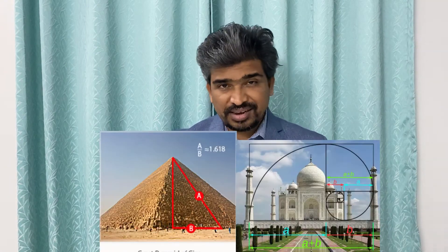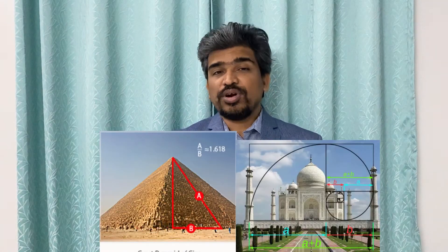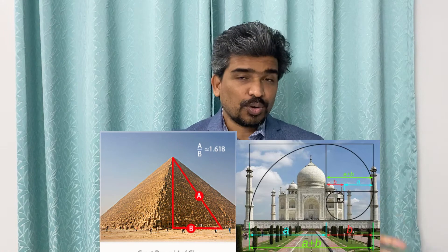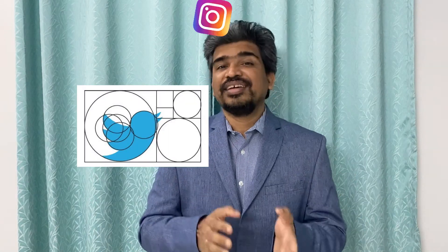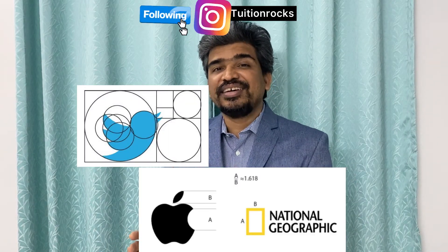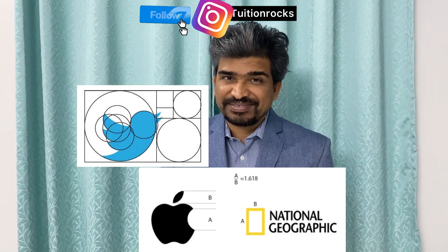The golden ratio is also found in nature — examples include sunflowers, ferns, and petals. It is also used in architecture, such as the Pyramids of Giza and the Taj Mahal. And it is used in the design of logos like Twitter, Apple, and National Geographic.